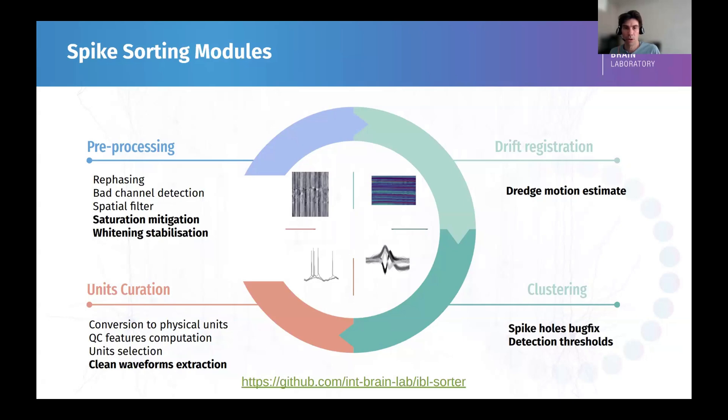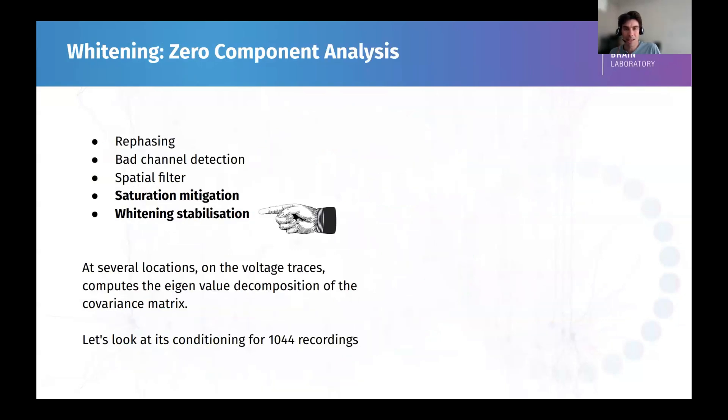I'm going to cover the drift registration, the whitening stabilization, and a bit of the clustering. So, the whitening stabilization is something that we don't know happens in a spike sorter, but it's very important is the way we normalize the data. Usually, those pattern recognition algorithms, they need data that is a z-score that has a variance of one and a mean of zero. There are several ways to do it. The way that Kilosort brand of algorithm does it is by whitening, which is called zero component analysis. I'm not going to go into the details, but I'm going to talk about the impact of this.